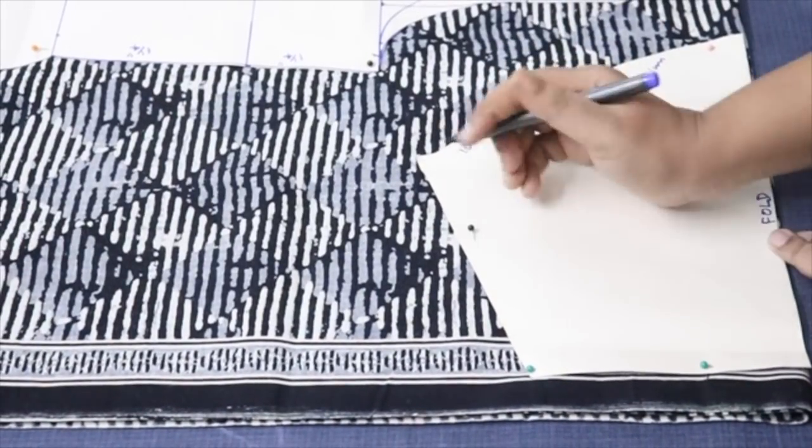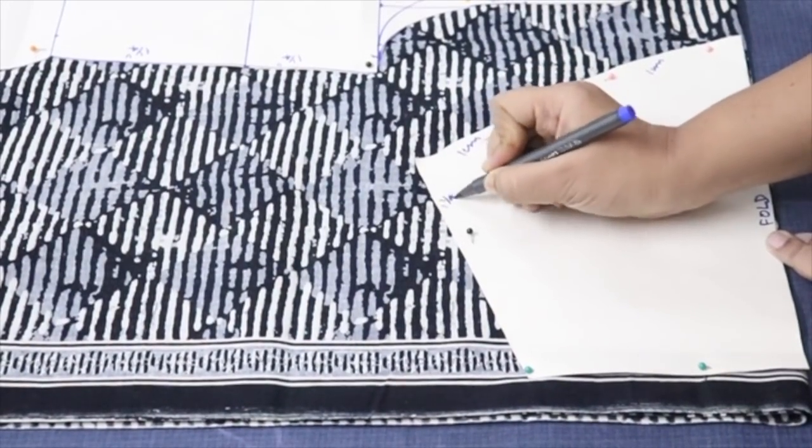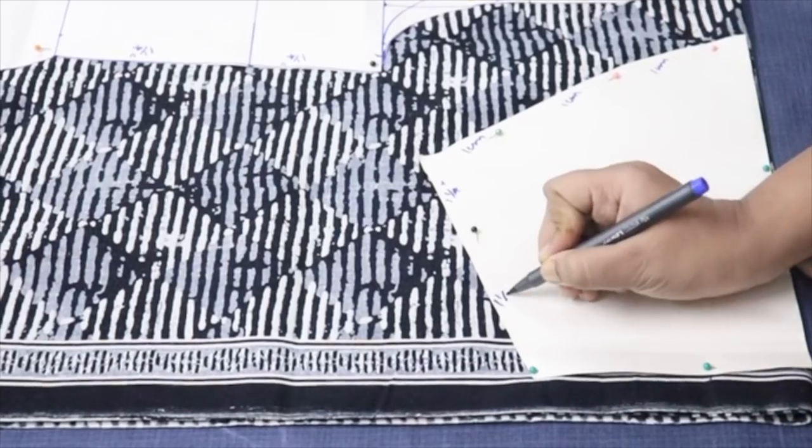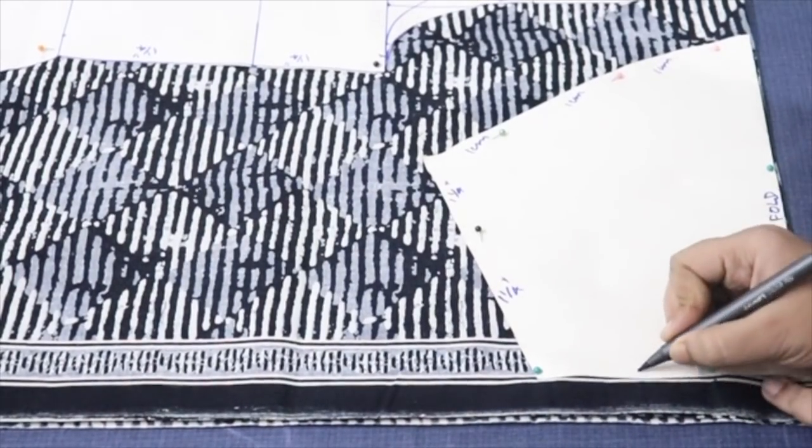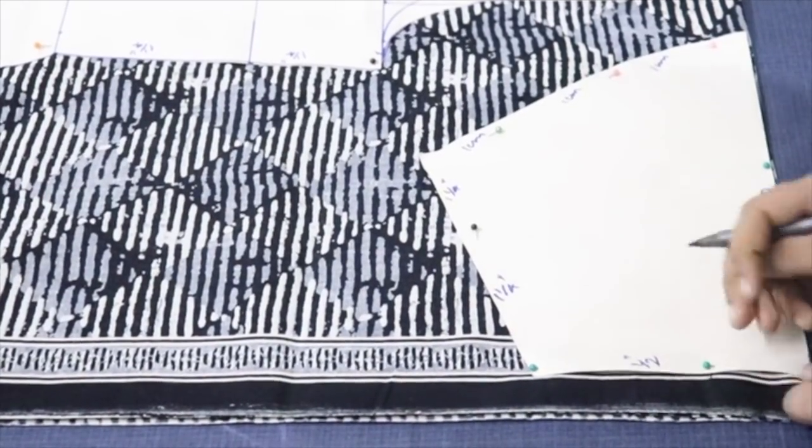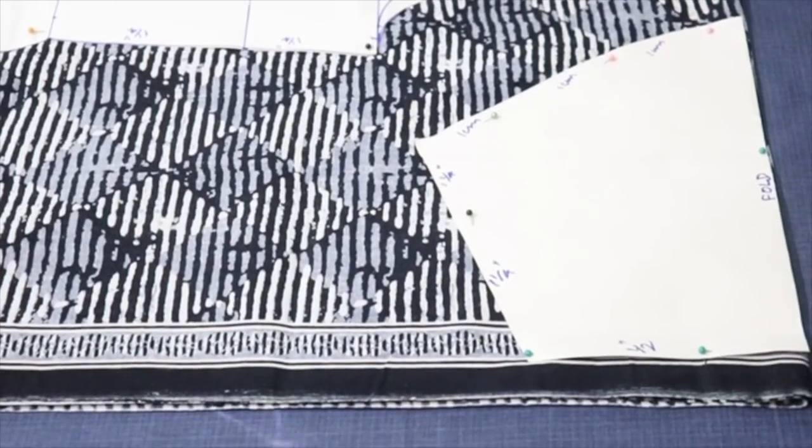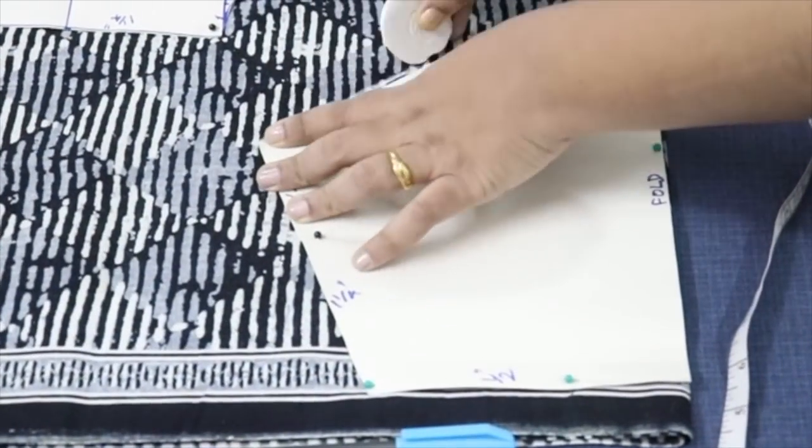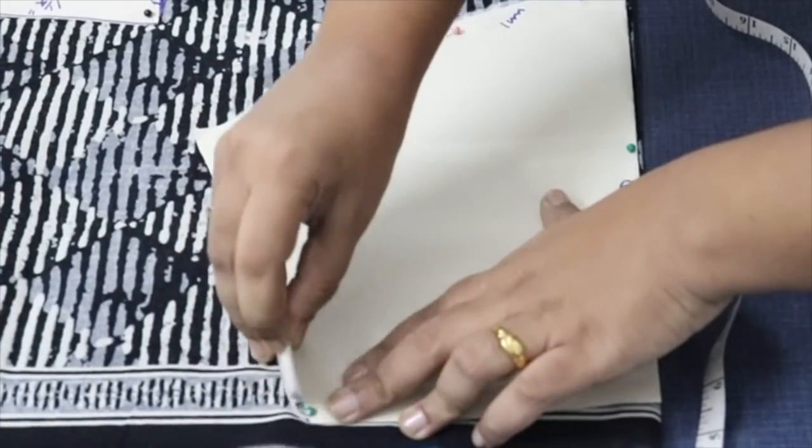So for the sleeve seam allowance for the arm part you have to give one centimeter. And in the side same as you given for the body one and one fourth. For sleeve open one inch or half inch.